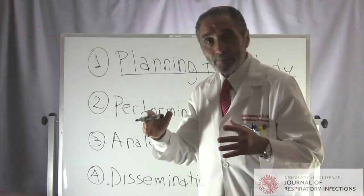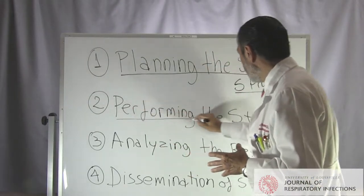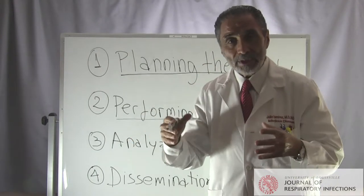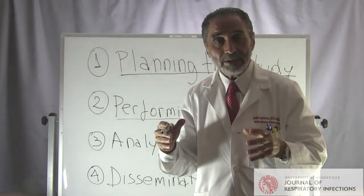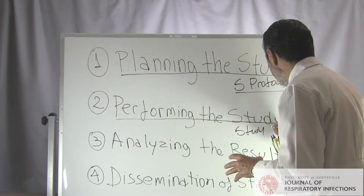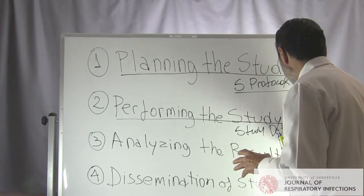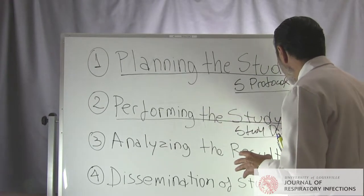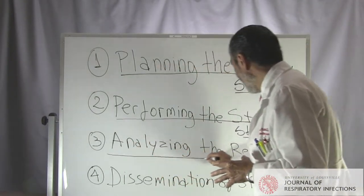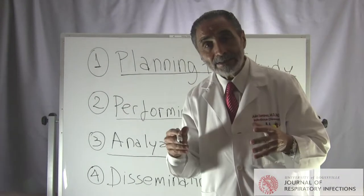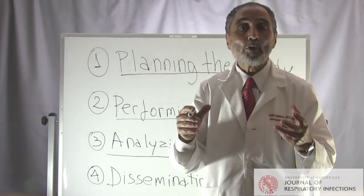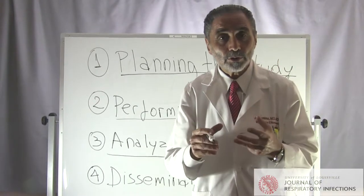The second step is performing the study. Here, we look for patients, we enroll patients, we do data collection and data quality, and we end up with a study database — that is the primary outcome of step two. Step three is analyzing the results. We perform statistical analysis and clinical analysis, and we end up with the conclusions of our study.